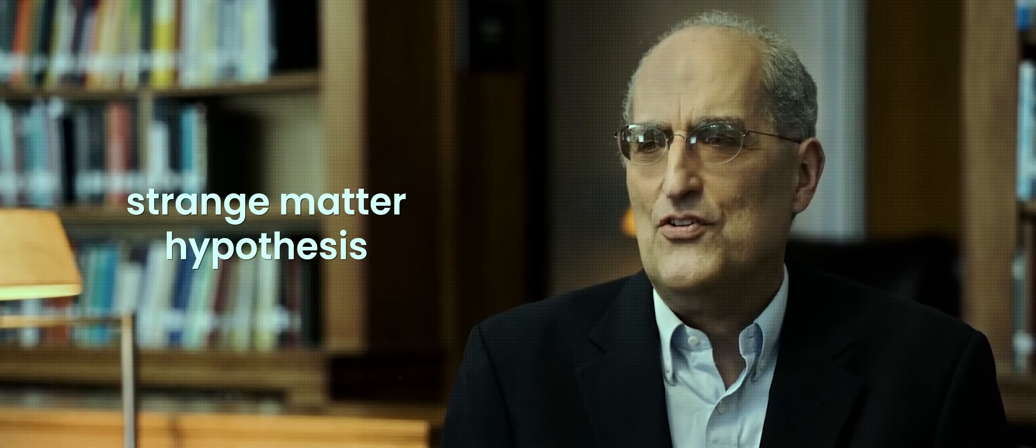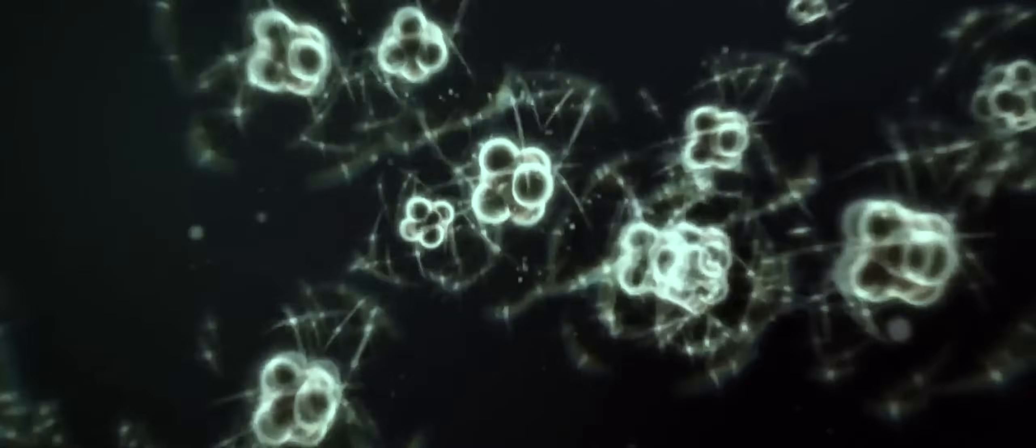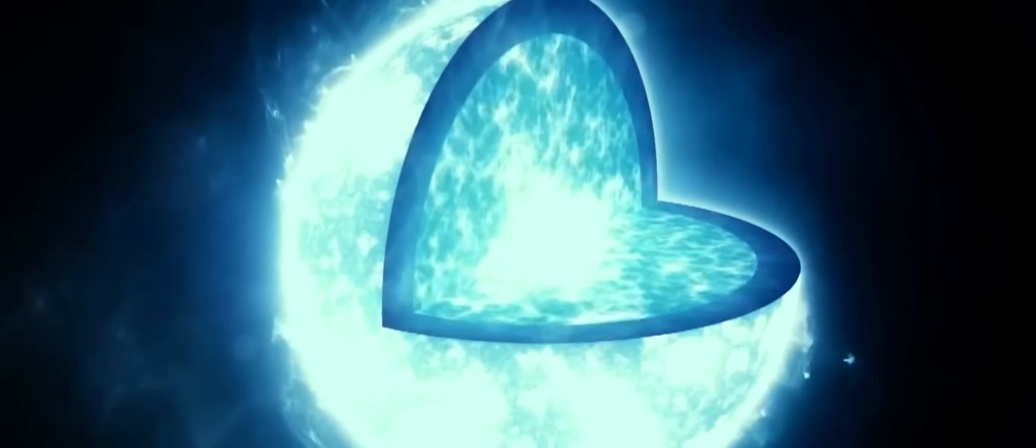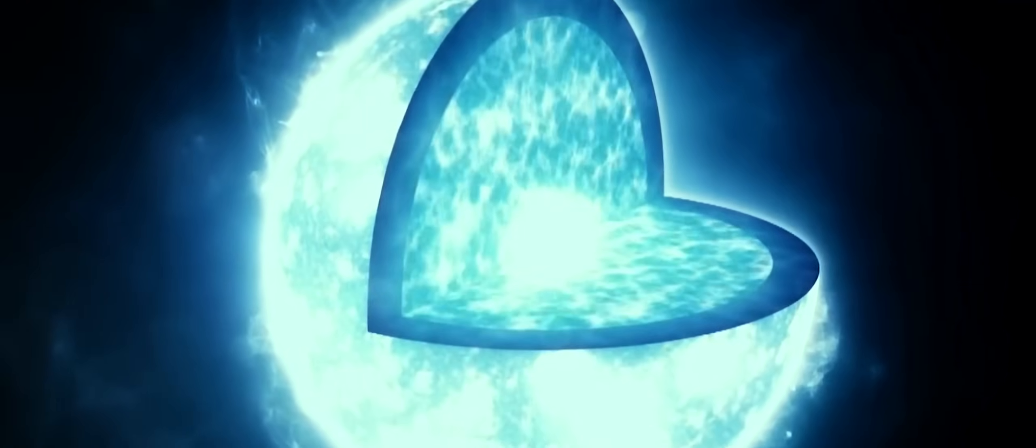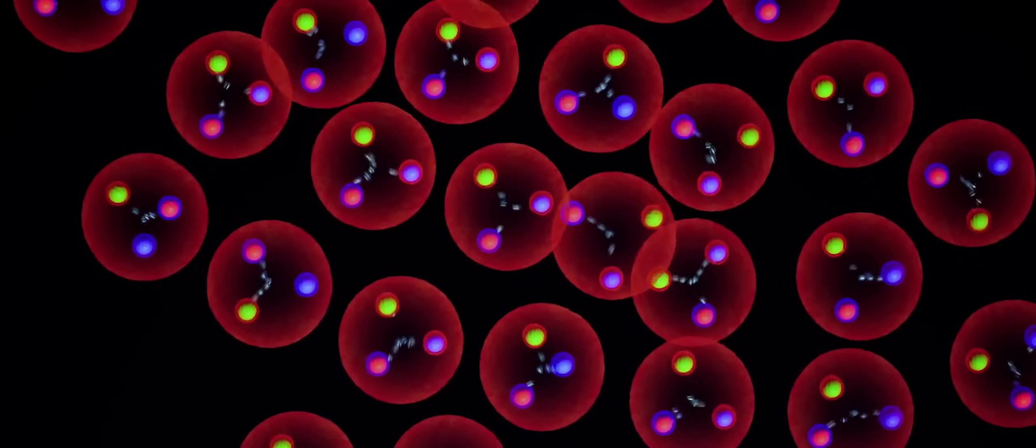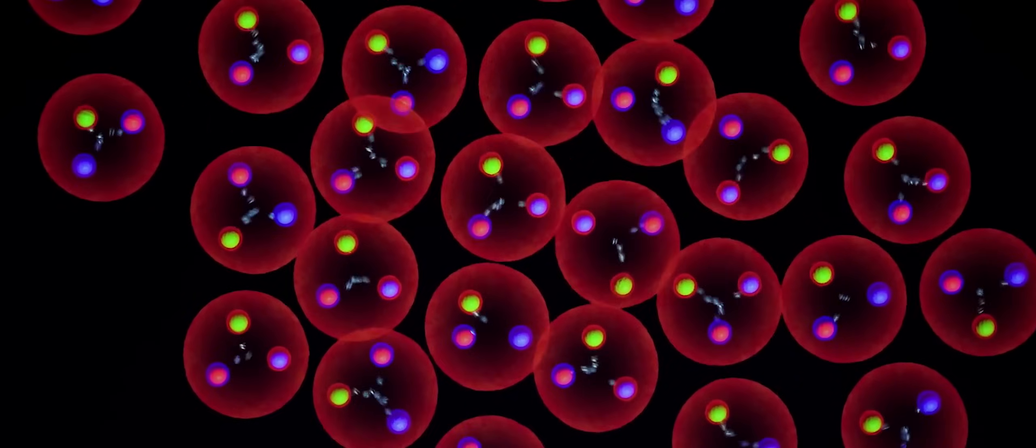In 1984, the physicist Edward Witten proposed a radical and unsettling idea. He called it the strange matter hypothesis. The hypothesis envisions a state of matter under conditions of extreme pressure, such as those found in the core of a neutron star. Witten theorized that in such an environment, a bulk mixture of up, down and strange quarks could actually be more stable than the ordinary matter made of just up and down quarks.